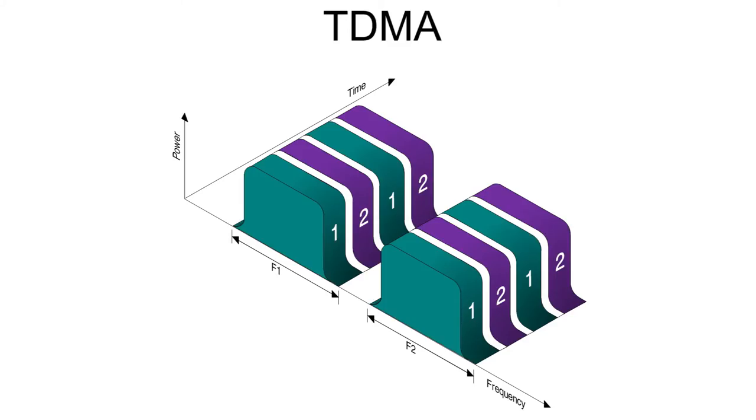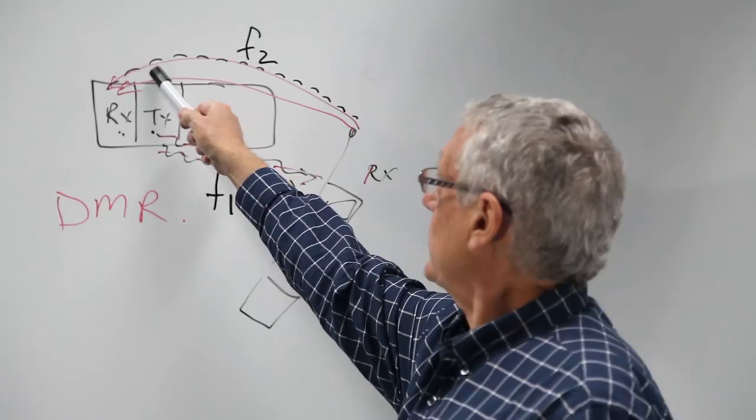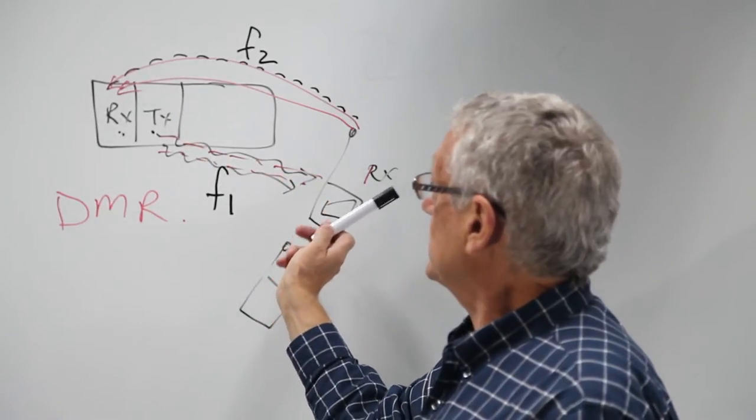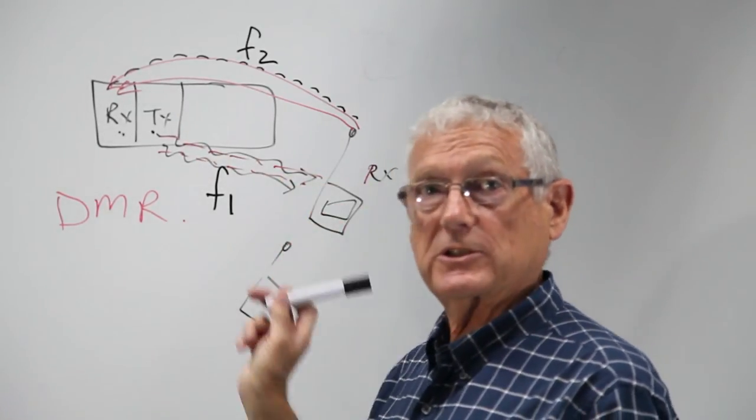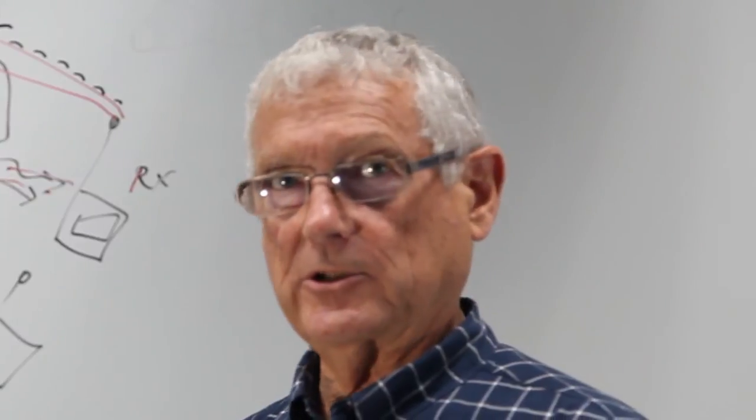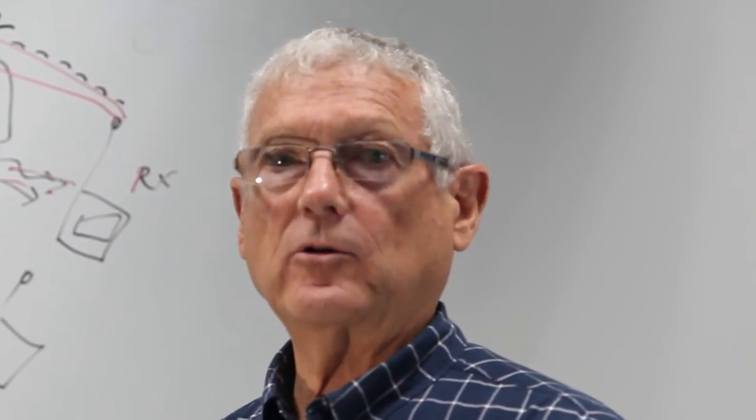In DMR, each physical channel is split into two logical channels using TDMA - two time slots for transmit, two time slots for receive. Each logical channel on a DMR system is a communication path for voice or data.